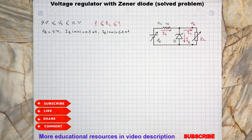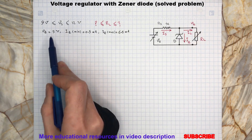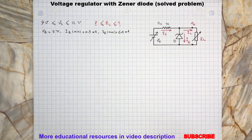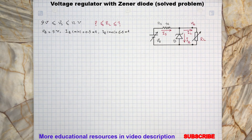Today we are going to review this voltage regulator with Zener diode. As we can see in this circuit, the Zener diode is rated for 5 volts, so it means we would like to maintain 5 volts at the load terminal. At the same time, the input unregulated voltage varies between 9 and 12 volts, and the goal here is to determine the minimum and maximum load resistance.